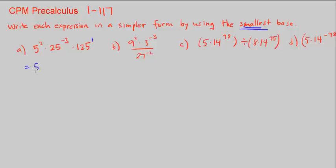So we can reduce this: we have 5 squared, 25 is basically 5 squared, so that's being taken to the power of negative 3. And 125, well we know 5 times 5 is 25. If you multiply that times 5 you get 125. So this we can replace with 5 cubed.